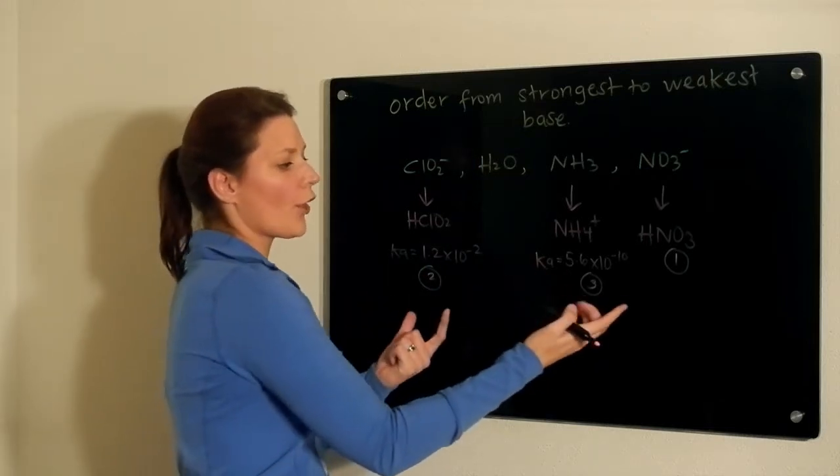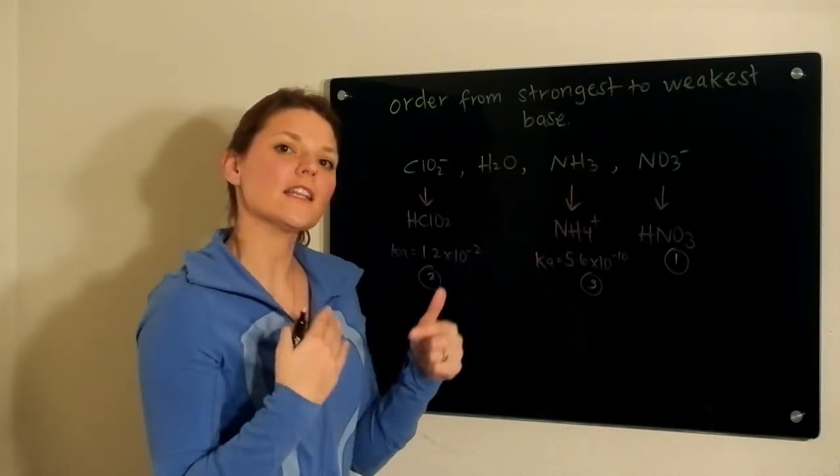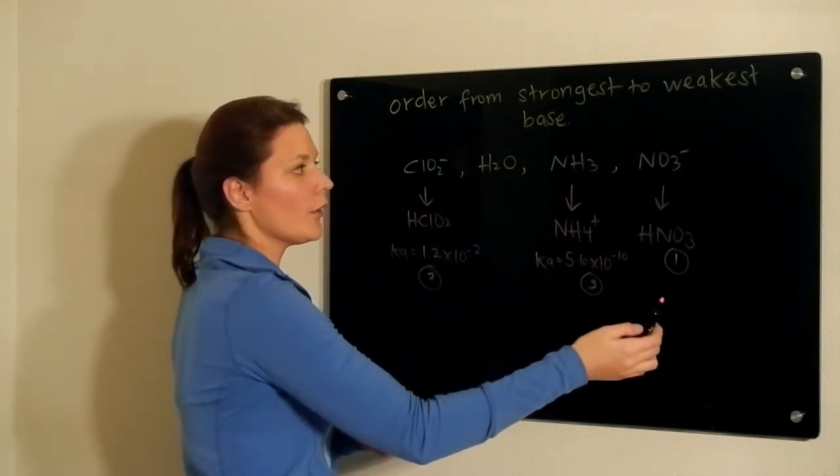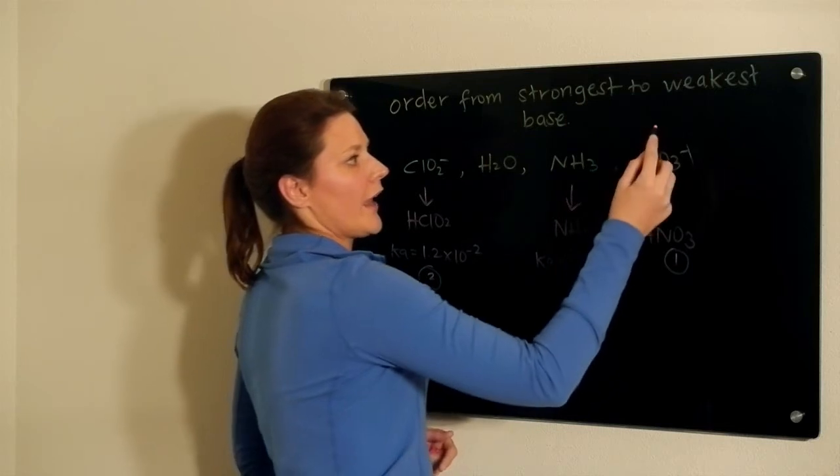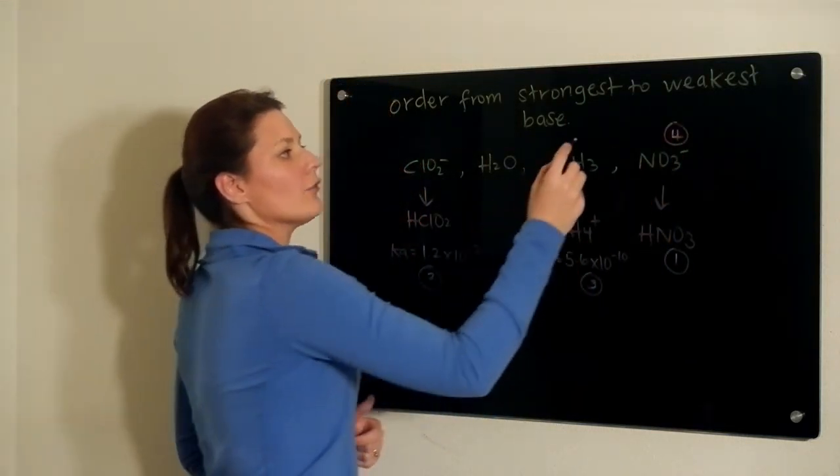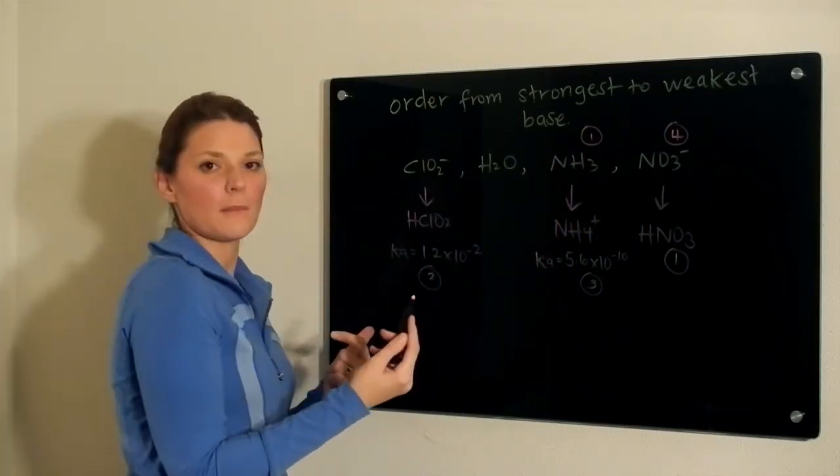When you now are going to go and talk about ordering your bases, you basically flip the order. So the strongest acid we have here would be the weakest base we have here. So I'm going to call that 4. The weakest acid we have would be the strongest base. And this one would fall in the middle.